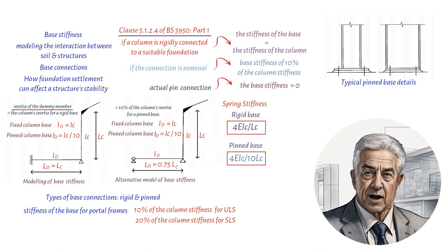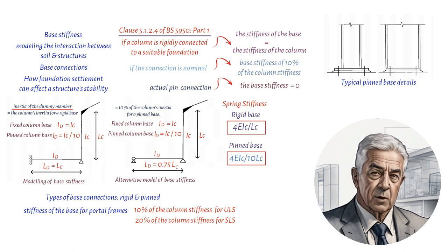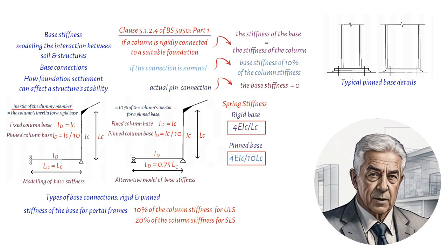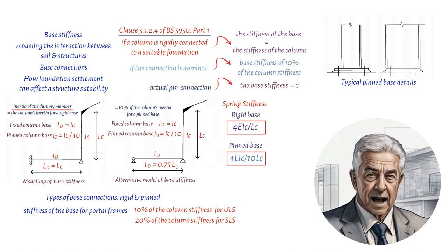These details are preferred for two reasons. First, the use of four holding down bolts allows the column to be erected without guying or propping, and permits easier adjustment and plumbing. Second, a moment-resisting base may be required for stability during fire if the column is situated near a site boundary.